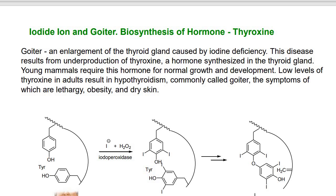Low level of thyroxine in adults results in hypothyroidism, commonly called goiter, the symptoms of which are lethargy, obesity, and dry skin. Our focus is the structure of thyroxine, and we want to capture the knowledge of what the functions of iodide ion are.